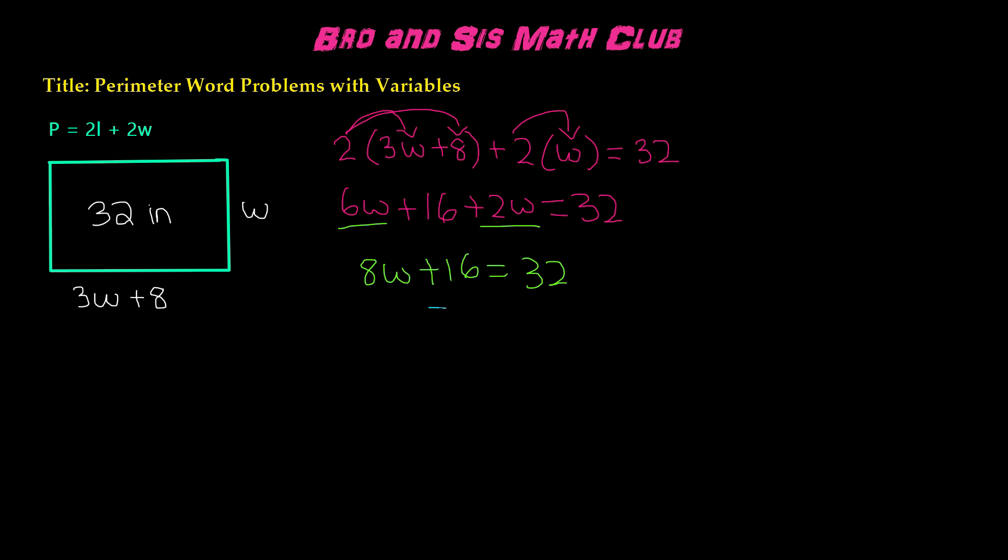Then we're going to subtract 16 from both sides. Positive and negative 16 cancel each other out, and we're left with 8w is equal to 16. Divide by 8 on both sides. The 8 cancels each other out.